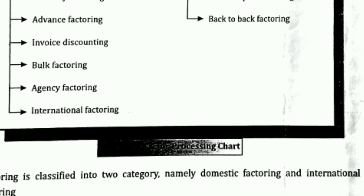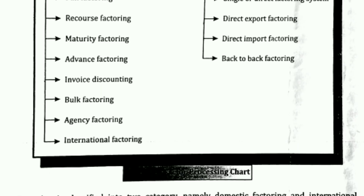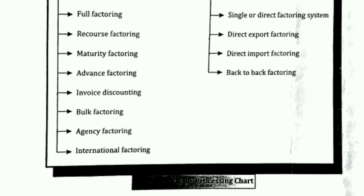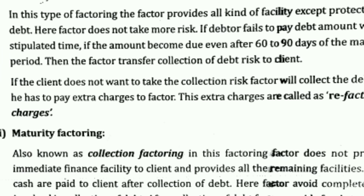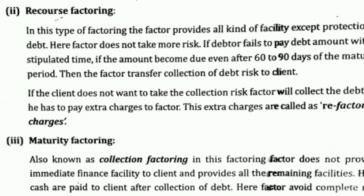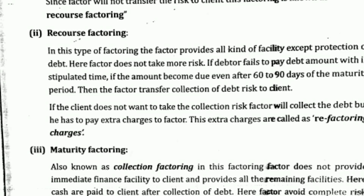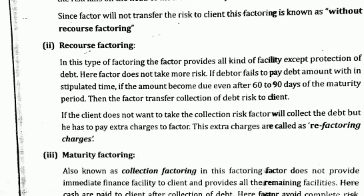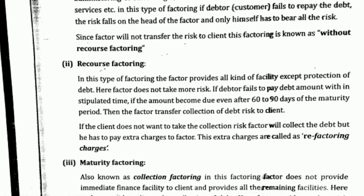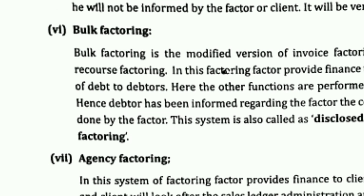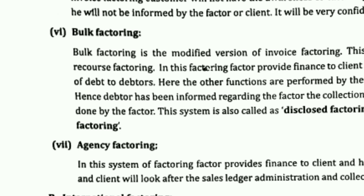Next we have factoring. When a company sells its goods on a credit basis, it takes many days to collect its debts. But if the company is in need of money, it can use the factoring facility to convert its debts into liquidity — that is, cash. Here, a financial institution takes the company's receivable accounts, gives them cash, and charges interest. There are types of factoring also.